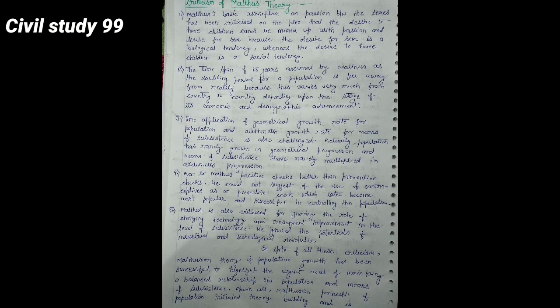Now we will see criticism of Malthus' theory. The first criticism is that Malthus' basic assumption on passion between sexes has been criticized on the plea that desire to have children cannot be mixed up with passion and desire for sex, because desire for sex is a biological tendency whereas the desire to have children is a social tendency. Second criticism is that the time span of 25 years assumed by Malthus as the doubling period for a population is far away from reality, because this varies very much from country to country depending upon the stage of its economic and demographic advancement. The third criticism is that the application of geometrical growth rate for population and arithmetic growth rate for means of subsistence is also challenged.